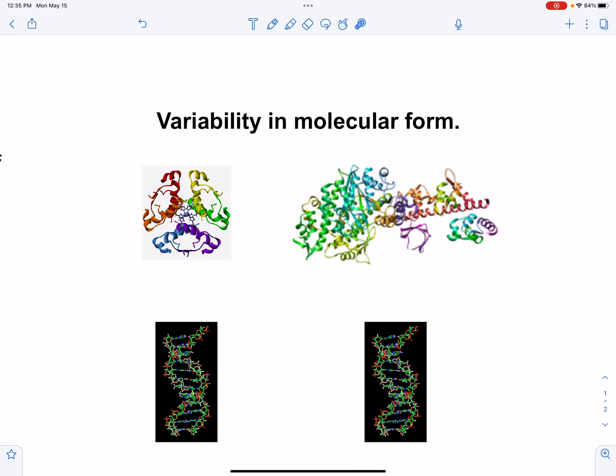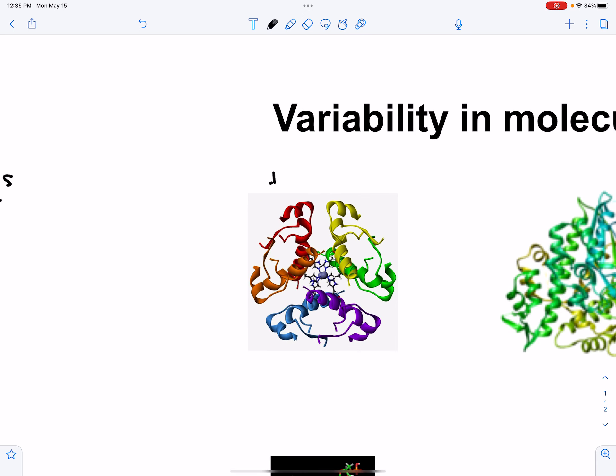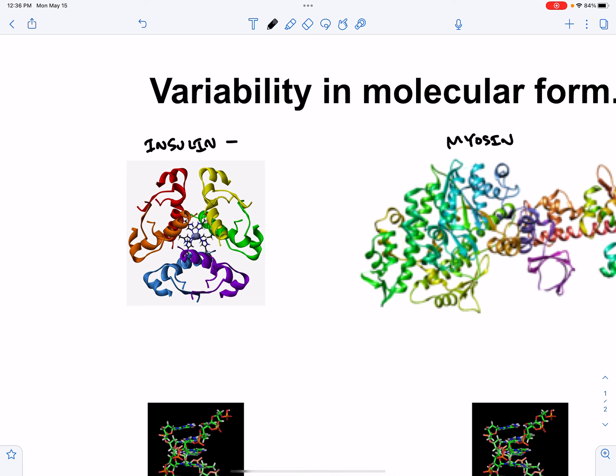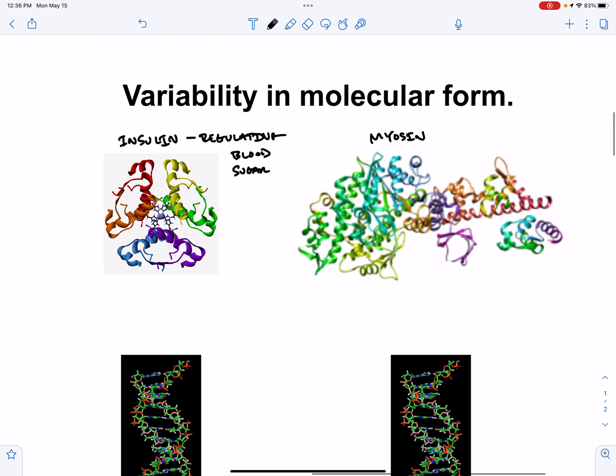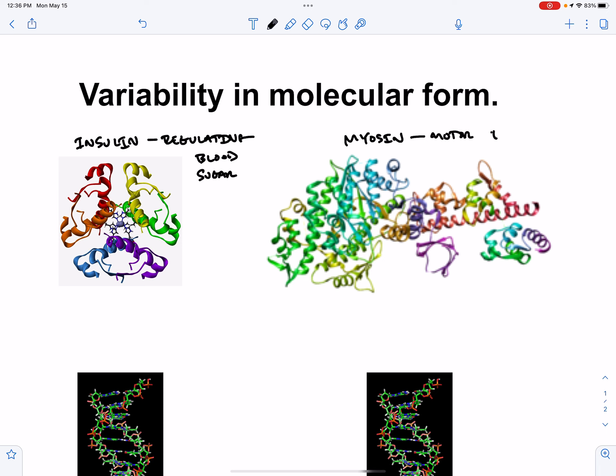Variability in molecular form. Here is a structural schematic of human insulin. Here is a picture of myosin. Insulin is a protein that's important in regulating blood sugar, and it's produced in the pancreas and it's found in the bloodstream. Myosin is a motor protein that's responsible for muscle contraction.